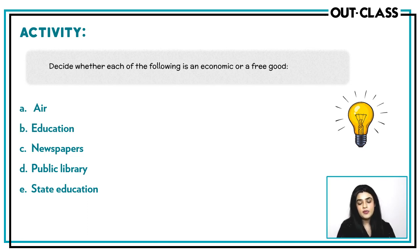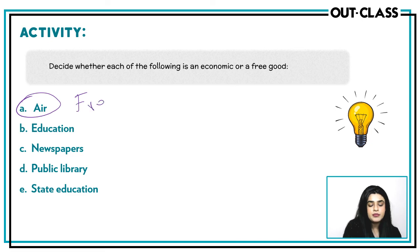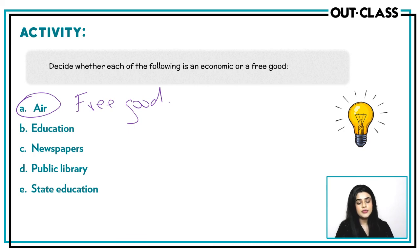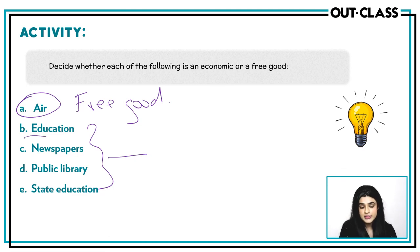Activity: decide whether each of the following is an economic or a free good — air, education, newspapers, public library, and state education. Out of all of these, air is a free good, because you do not require resources to make air; it is just there, available for you to use. All the other goods — education, newspapers, public library, and state education — require resources to be made, so all of these are economic goods.